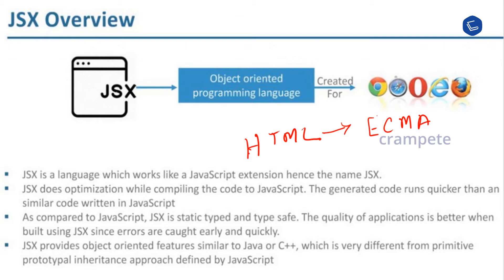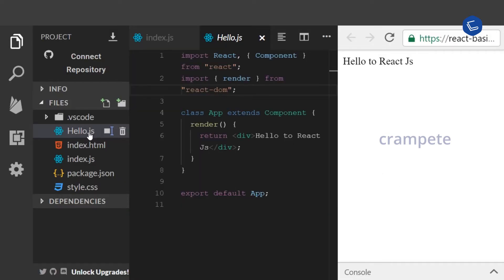If an attribute value is enclosed in quotes, the value is a string. Otherwise, wrap the value in braces — the value is treated like a JavaScript expression. We will have a detailed study in the coming sessions. The respective JSX file will have an extension of .jsx or .js. For example, consider the file name hello.js — it can have a file with a .jsx or .js extension.